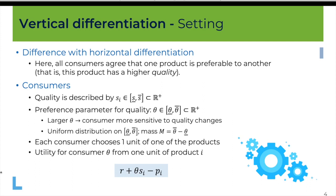The utility of a consumer characterized by parameter theta from buying one unit of product i sold at price p_i is: some base utility R, plus a utility that depends on the consumer's taste for quality changes multiplied by the quality measure of the product, minus the price. For a given value of theta, utility increases with the quality of the product — all consumers agree that a larger quality is better for them.